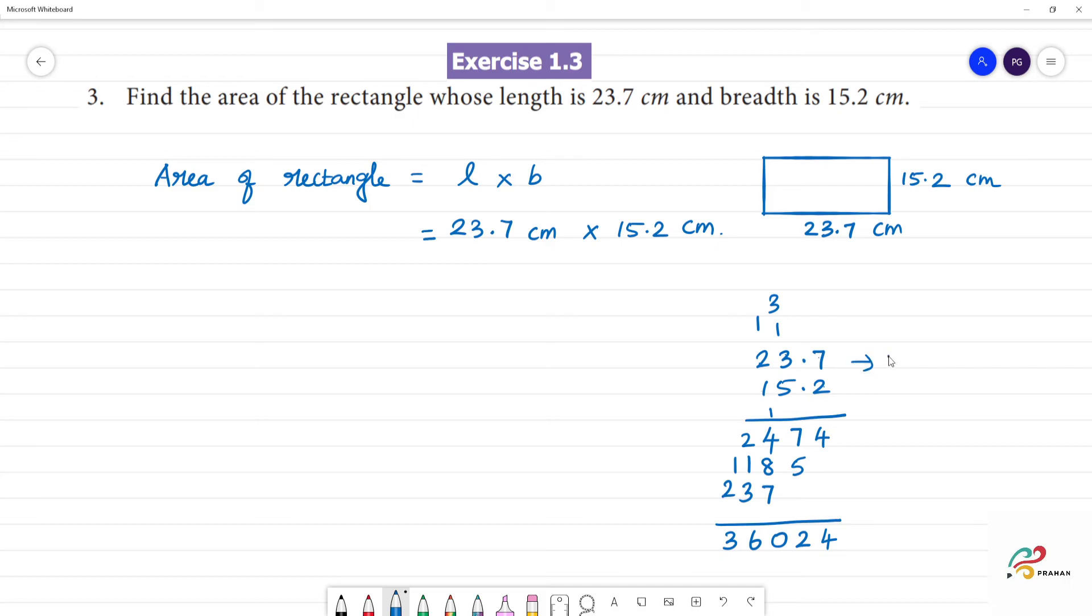The decimal is 1 decimal place, 2 decimal places, total is 2 decimal places. So the answer is 360.24 cm². cm times cm is cm squared. Clear?